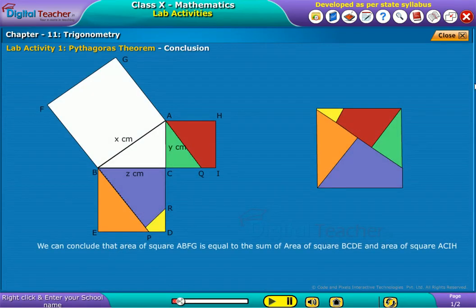We can conclude that area of square ABFG is equal to the sum of area of square BCDE and area of square ACIH.